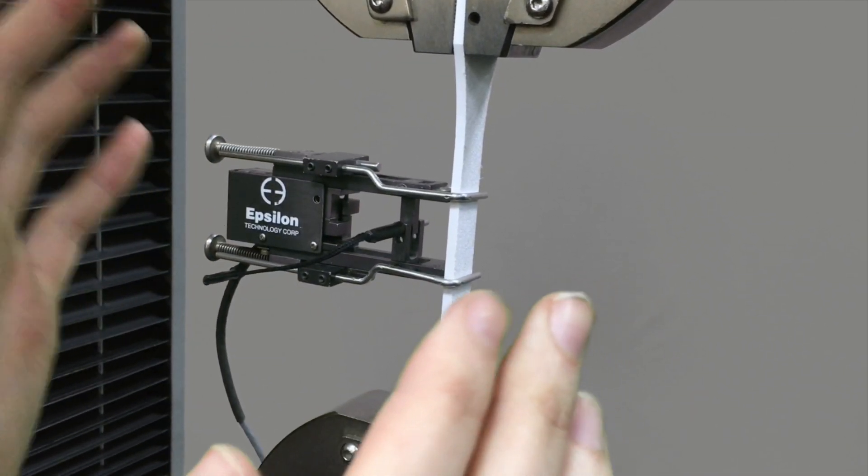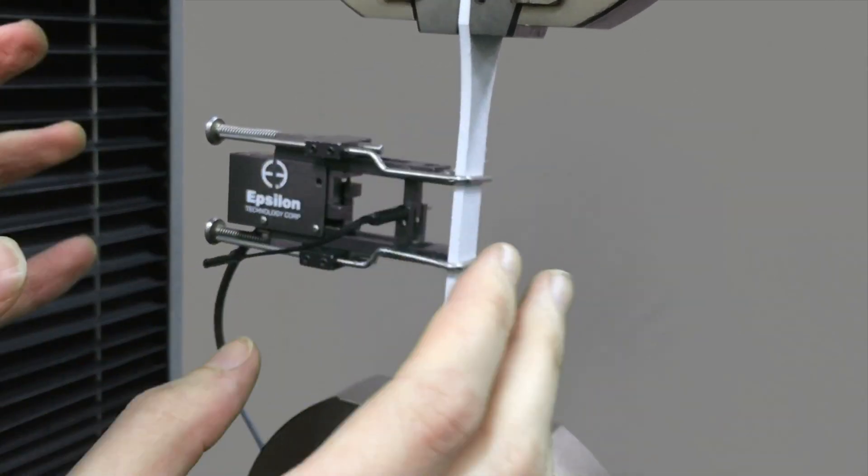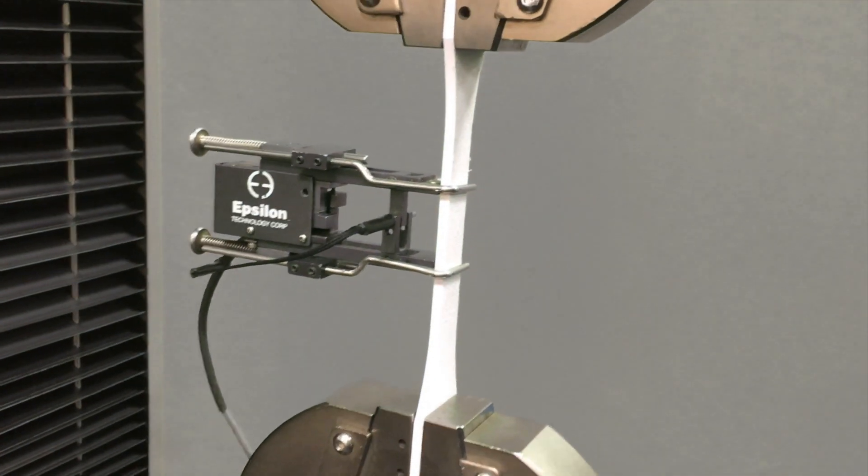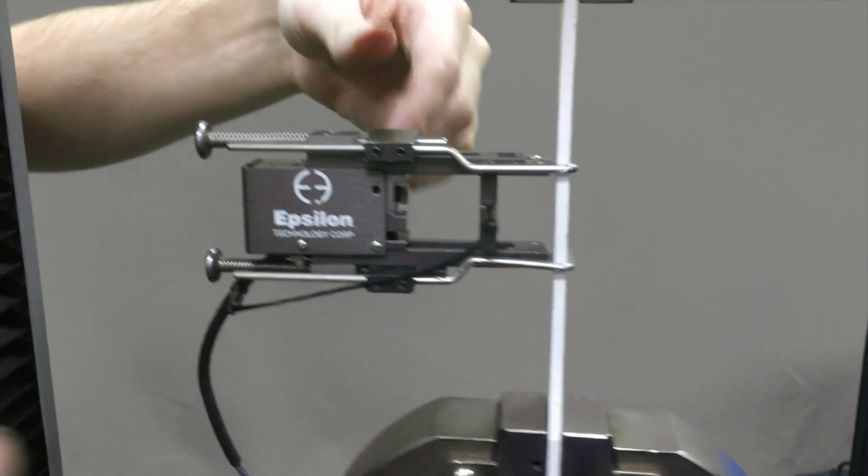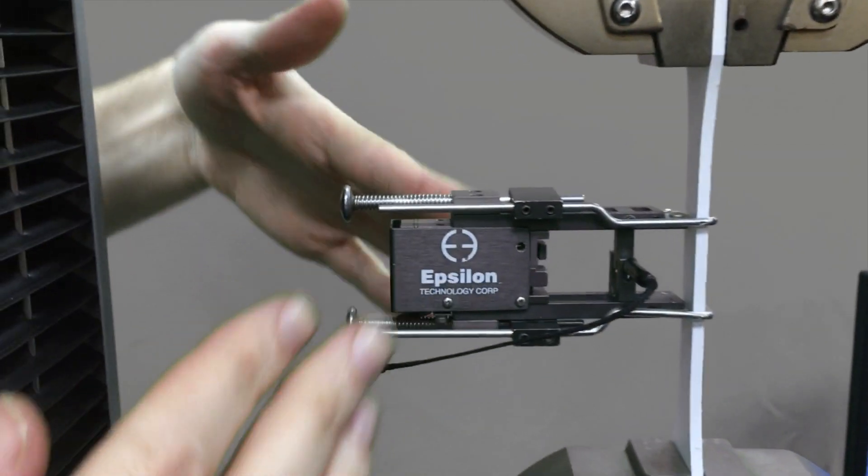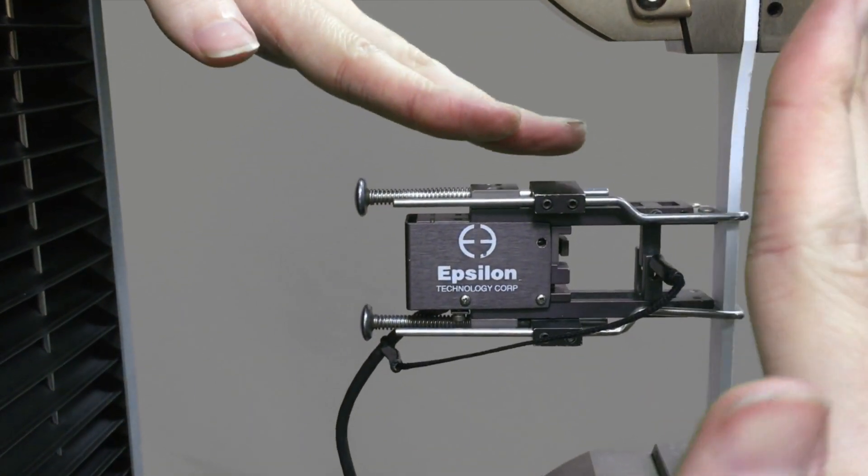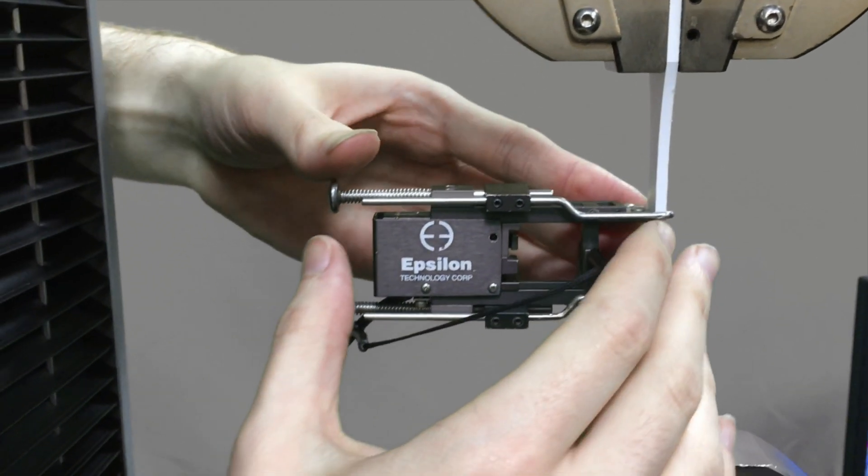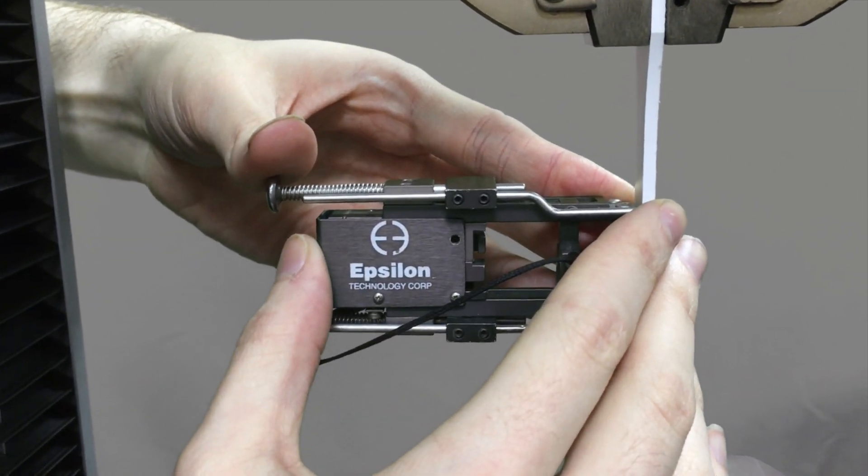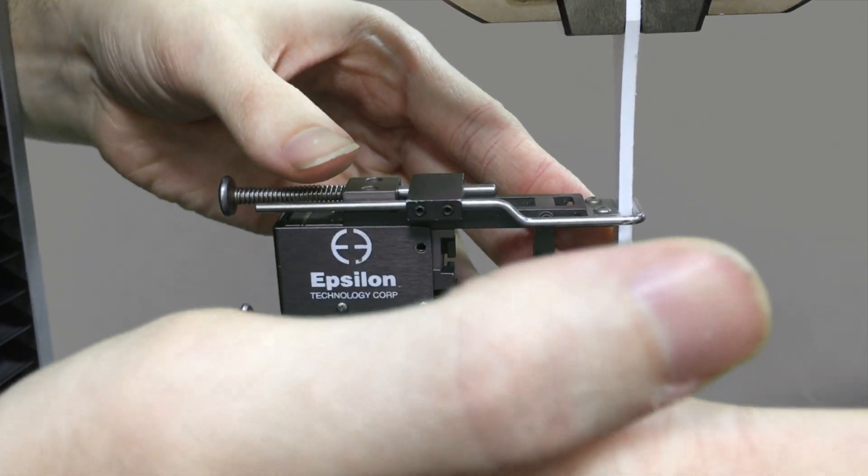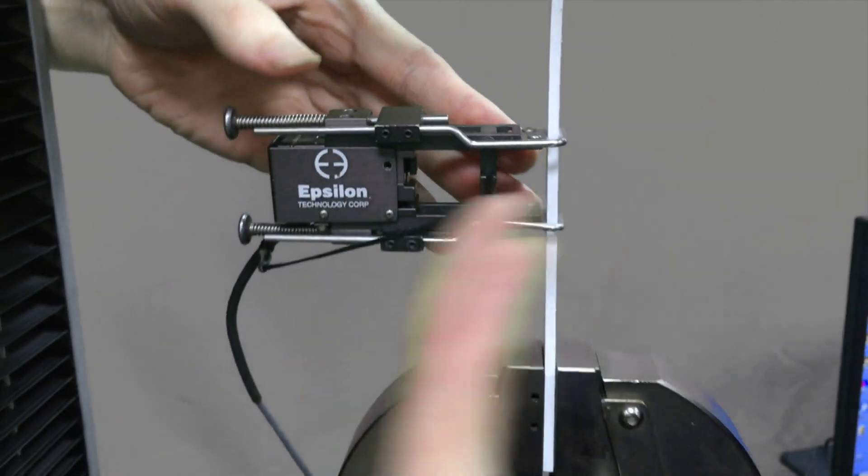And now the extensometer is on our sample. Another important note, besides the gauge length, is to make sure that the teeth are perpendicular to your sample. You want this to be lined up nice and straight. You don't want it wonky coming off the side like that. You want it nice and perpendicular.